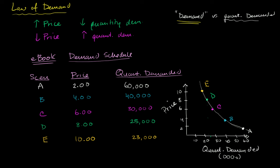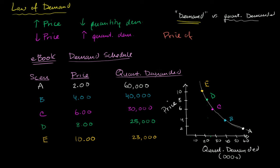The first of these that I will focus on — I'll say the price of related products, because we'll see that they're not all competing. The price of related products is one of the things that we're assuming is constant when we show this relationship; it's being held equal.